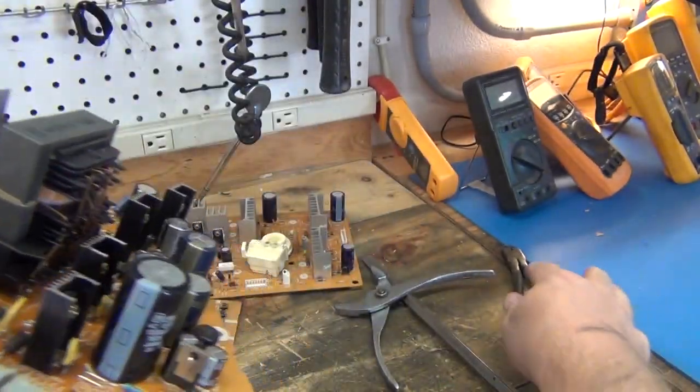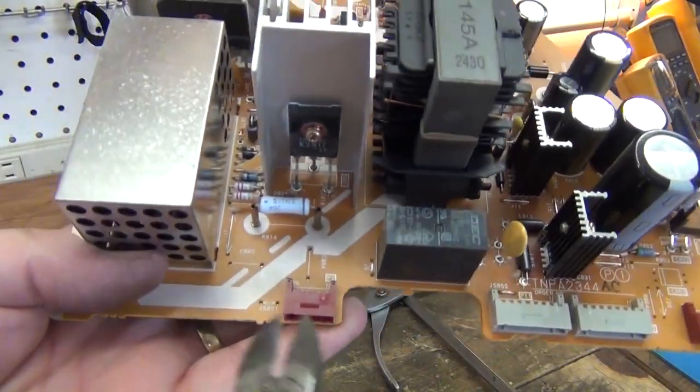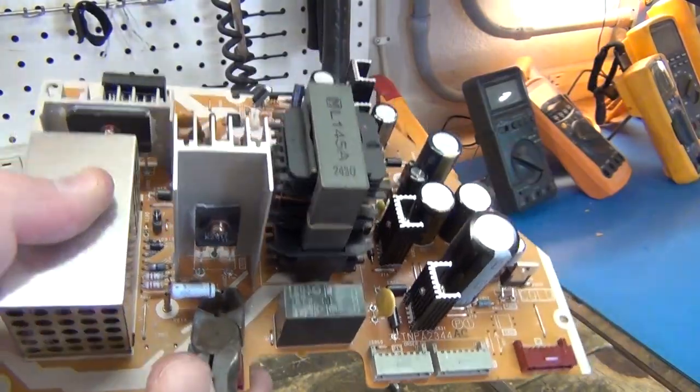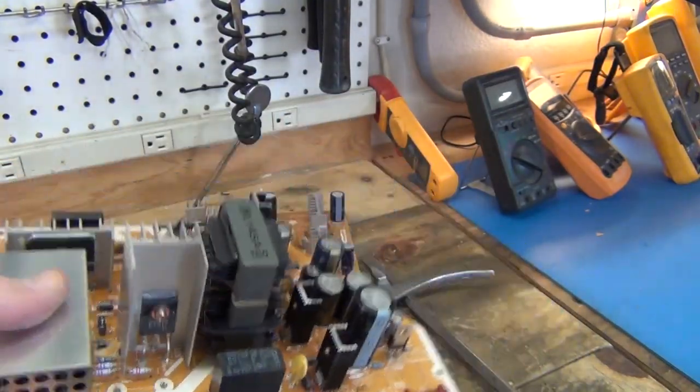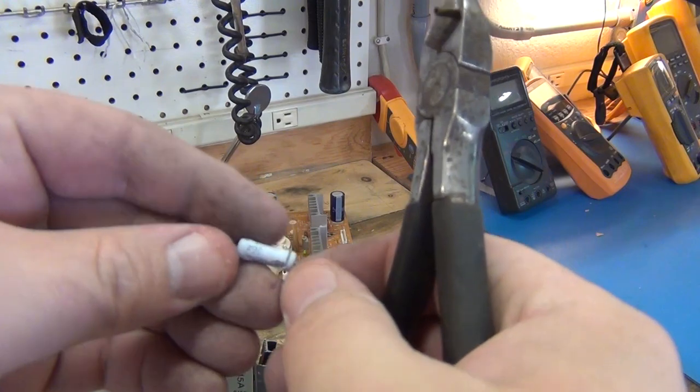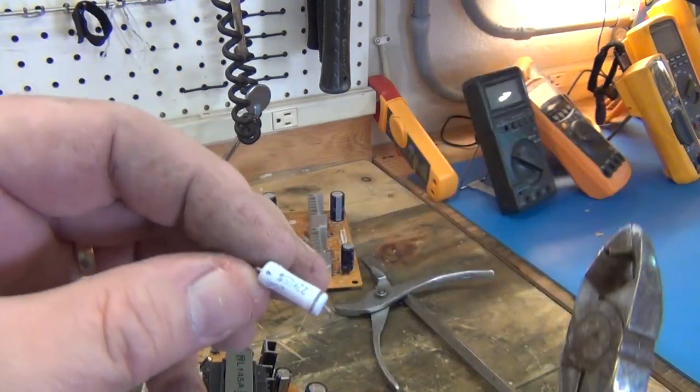And then these, another thing is if you've got big things that are standoff like that, like this power resistor, sometimes you can just snip them off. And as long as you can read what they are, you save that for later.